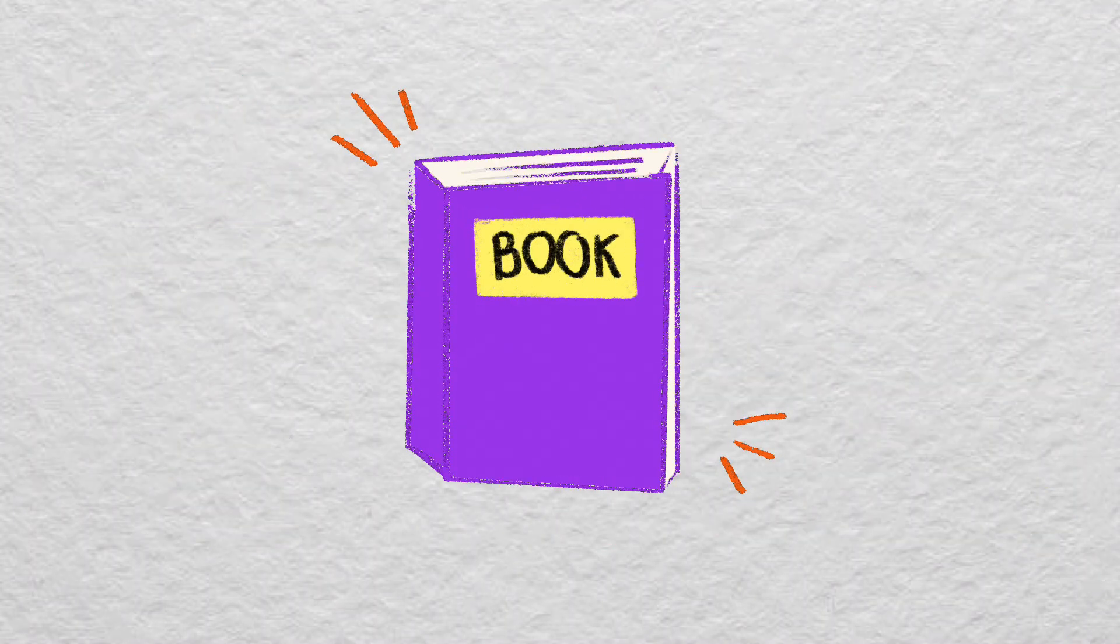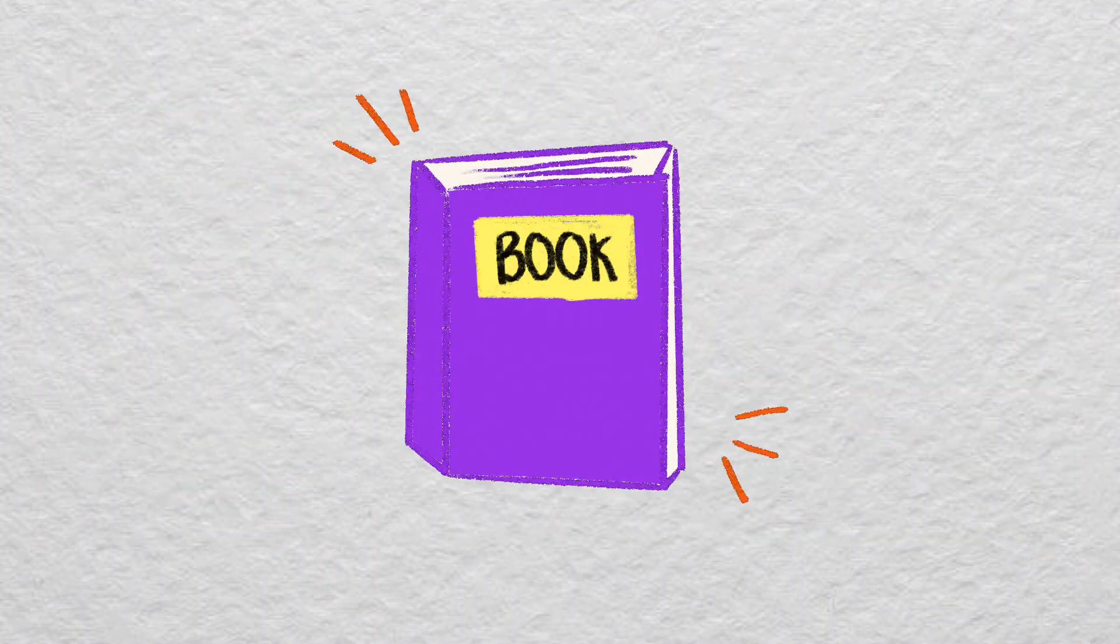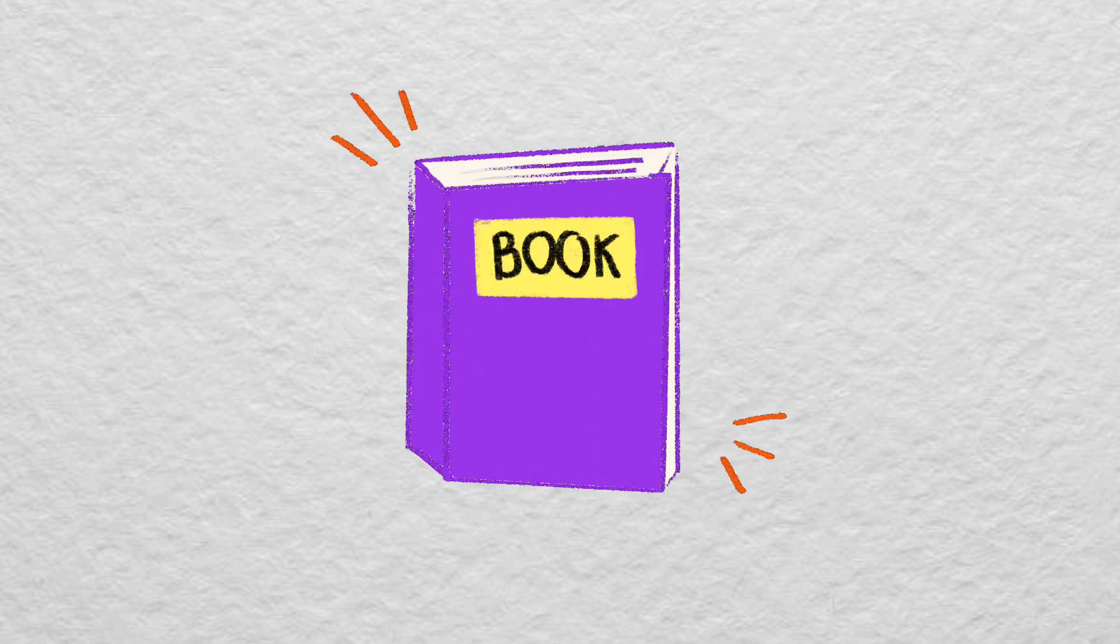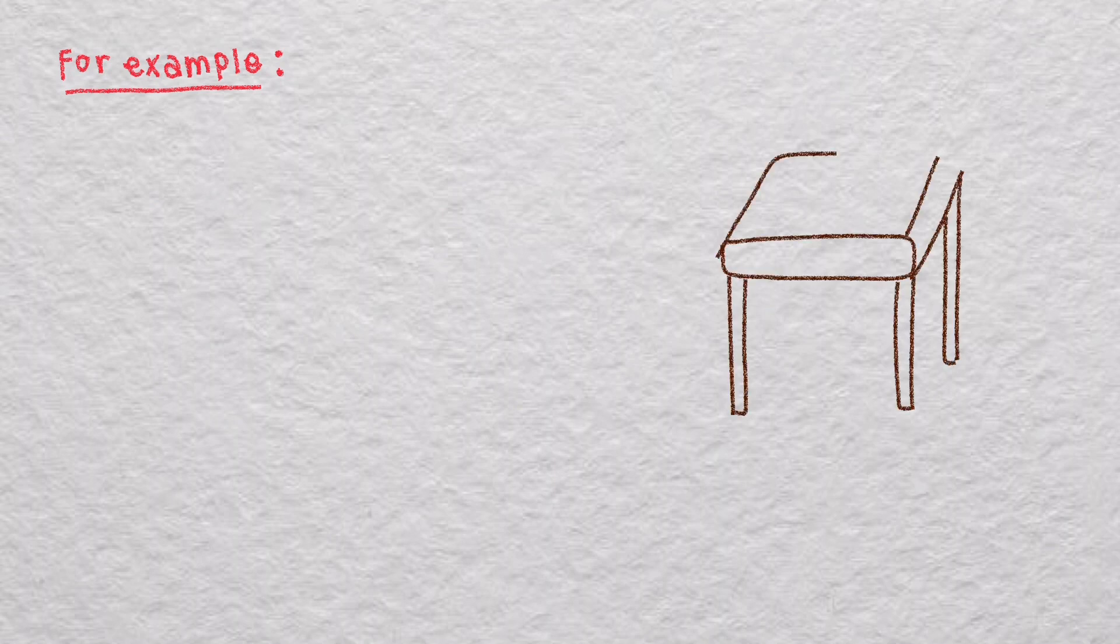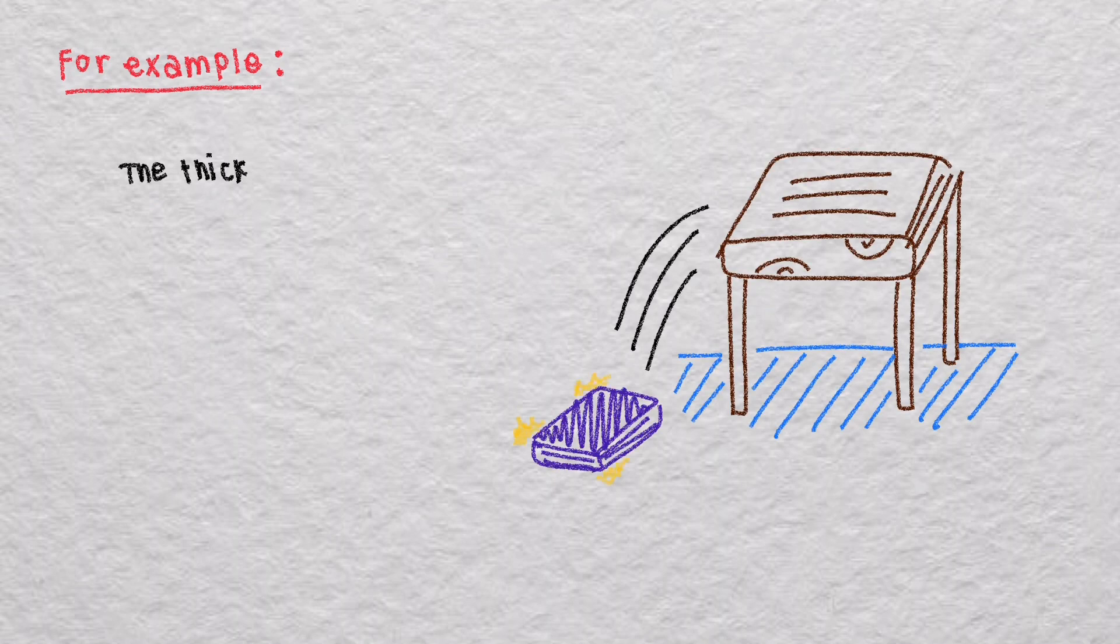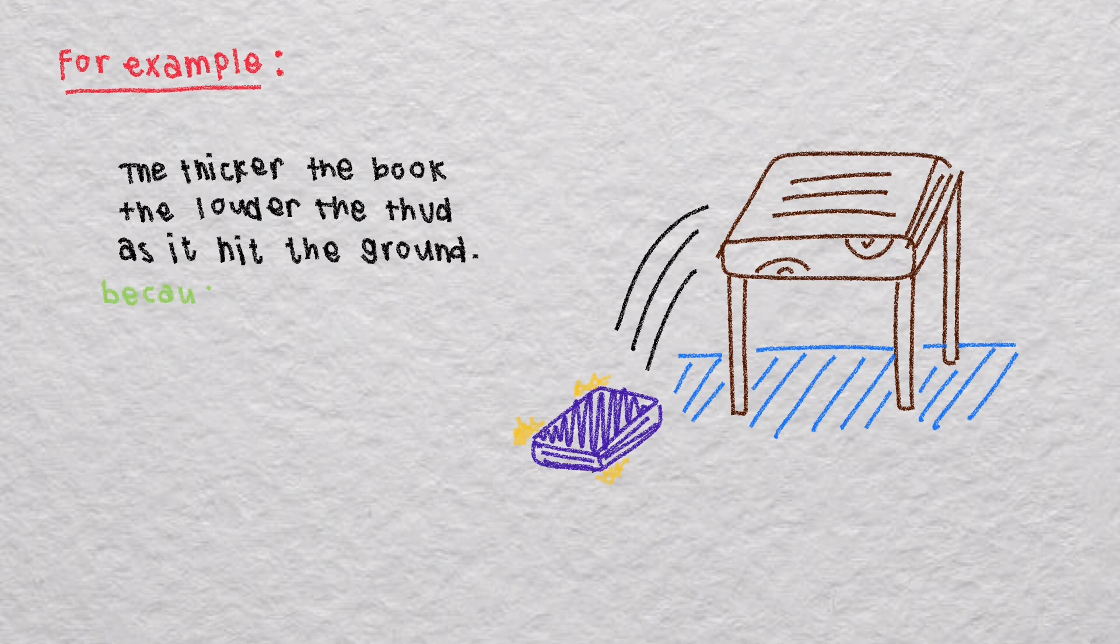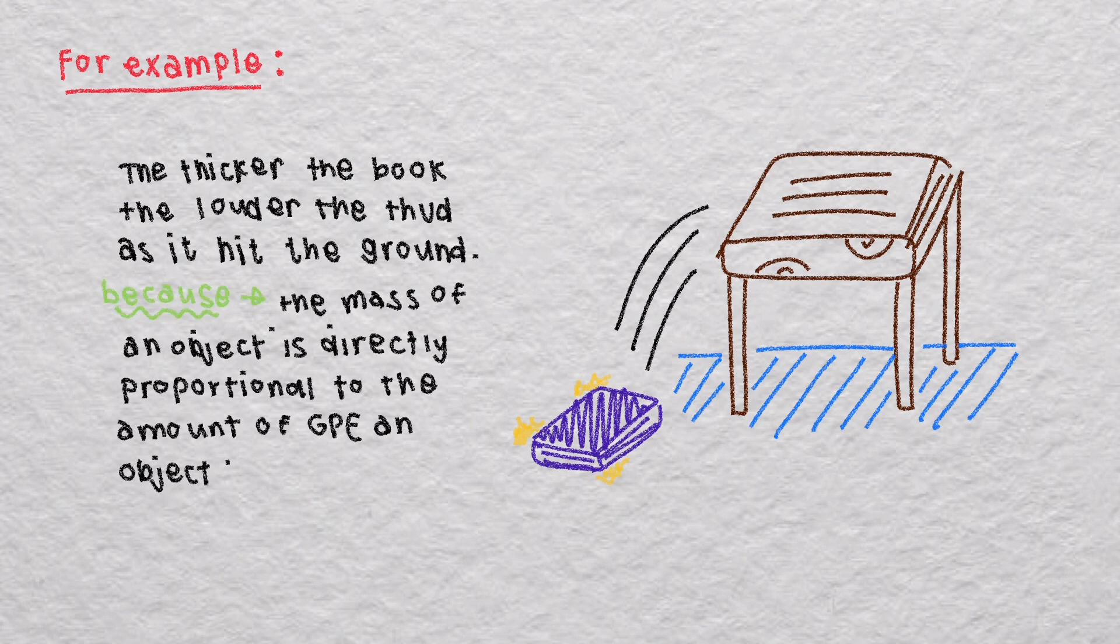You can understand it better if you think of a book resting on the table. The book has the potential to fall to the floor because of its elevated position related to the ground. The one that starts out on the floor can't fall because it's already on the surface. The book on the table has GPE, but the one on the ground doesn't. The intuition will also tell you that a book that's twice as thick will make twice as big a thud when it hits the ground. This is because the mass of the object is directly proportional to the amount of gravitational potential energy the object has.